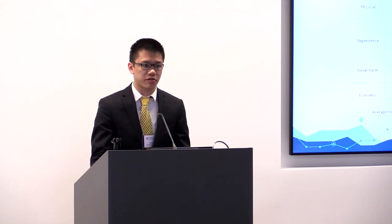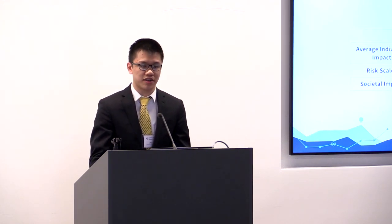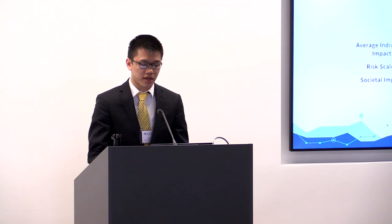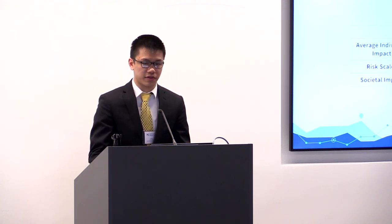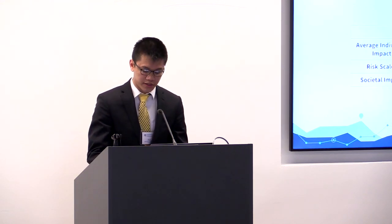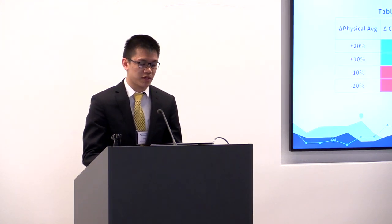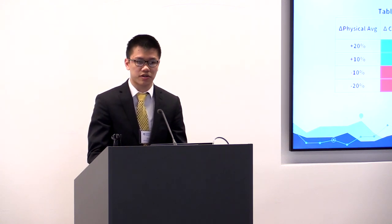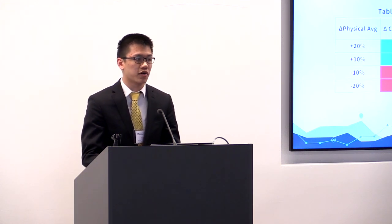The table displays the sub-factor scores and major factor averages for each of the four substances. According to our model, opioids rank most harmful for the individual while marijuana ranks least harmful — which makes sense because opioids tend to have fatal effects, while marijuana has medical benefits. The societal impact table shows that alcohol ranked most harmful while opioids ranked least harmful, which makes sense because there are significantly greater numbers of alcohol users compared to opioids. A sensitivity analysis was performed on our part three model, and as the physical average changed by a certain percentage, the output changed proportionally. A major strength of our model is that it can be applied to a variety of drugs and accounts for physical harm, social harm, economic harm, and dependence.